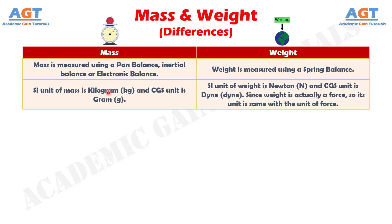Number 7: The SI unit of mass is kilogram and the CGS unit is gram, whereas the SI unit of weight is newton and the CGS unit is dyne, since weight is actually a force, so its unit is the same as the unit of force.